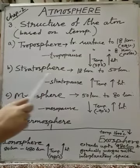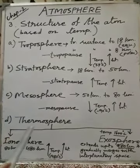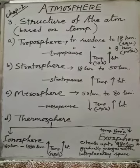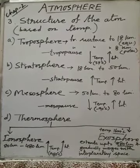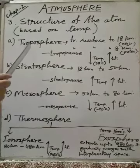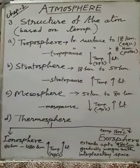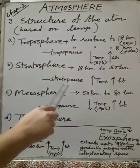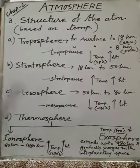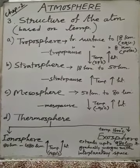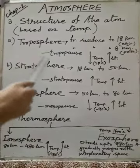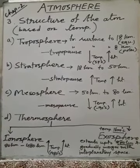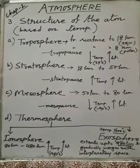Based on temperature, atmosphere is divided into four layers: troposphere, stratosphere, mesosphere, and thermosphere. Thermosphere is a layer where temperature is very high, and it is divided into two parts: ionosphere and exosphere. In between two layers, if you follow troposphere and stratosphere, one more thin layer is present called tropopause. Between stratosphere and mesosphere, another thin layer called stratopause. And between mesosphere and thermosphere, one more layer called mesopause.